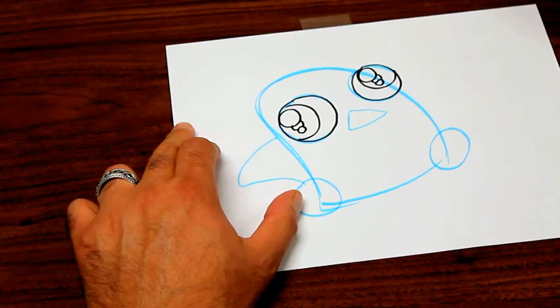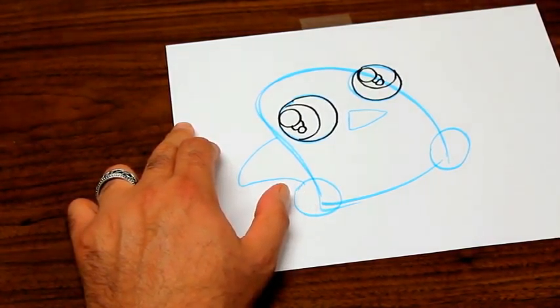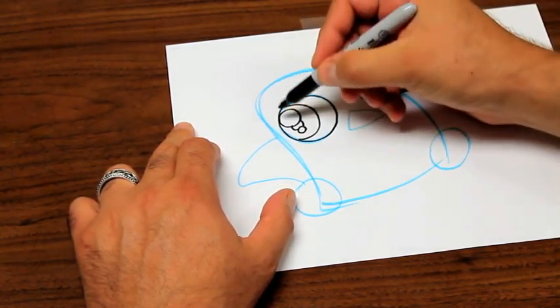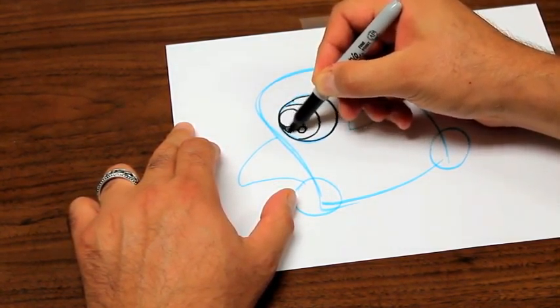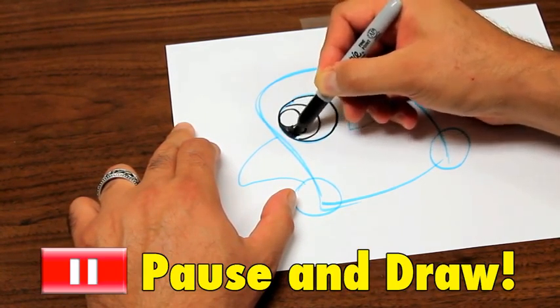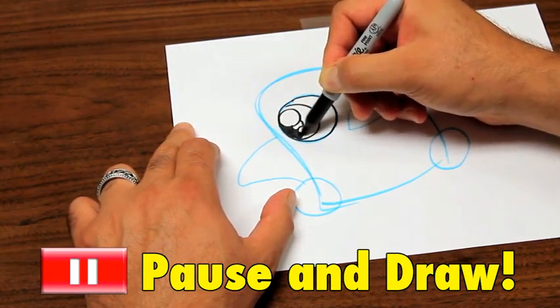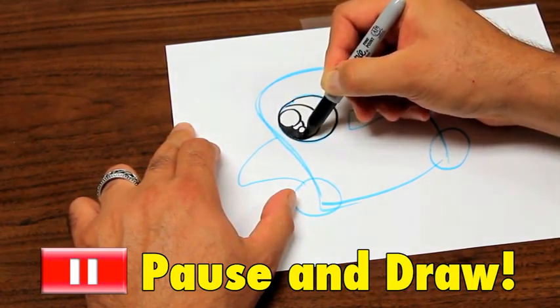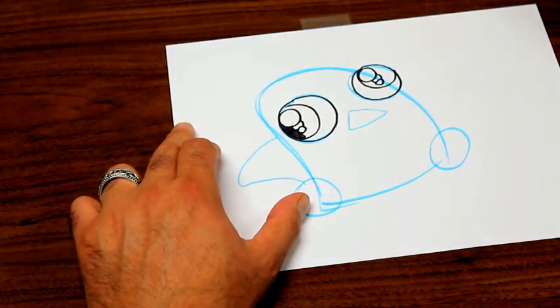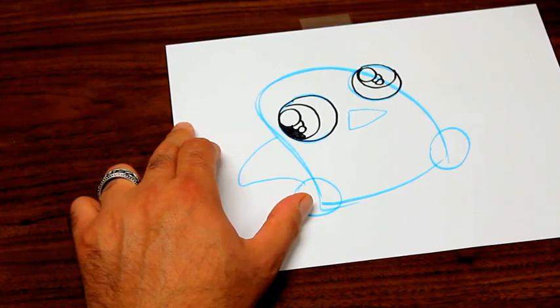So those are some really good chibi eyes, real big, and you notice we're using mostly circles on those. We're just building those and what we'll wind up doing ultimately is coloring in everything within the pupil except for the shine mark just like this. You can do that now if you'd like, but I'm going to go ahead and move forward to the nose and mouth in the same shape here for a platypus.